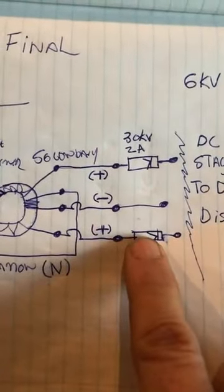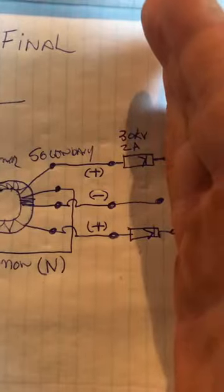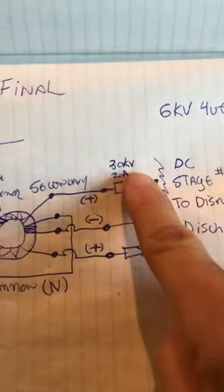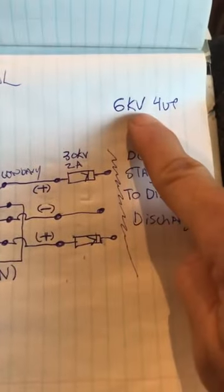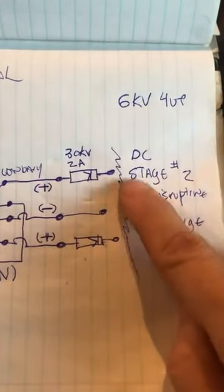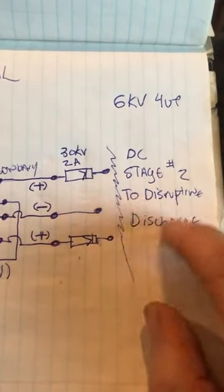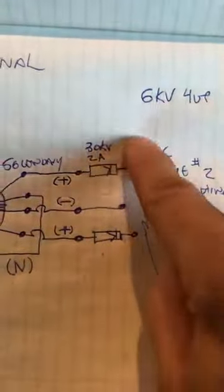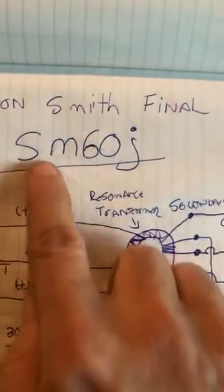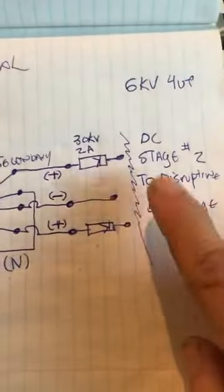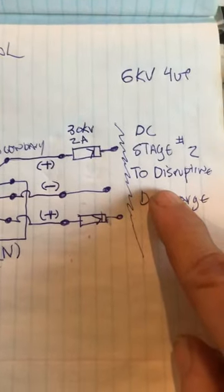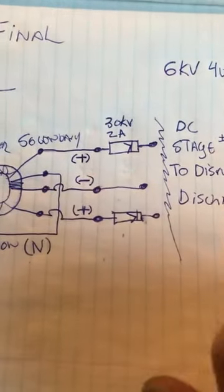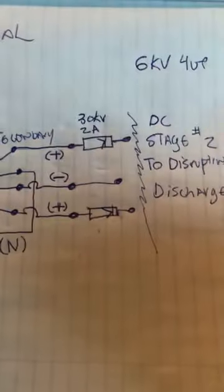So you end up with the device right here. And this here all the way back is Don Smith resonance system. From this point forward after the diodes, this is the 6 kilovolt, 6 kV, 4UF, DC stage number 2, to disruptive discharge. So this is your DC capacitor after this point. So up to that point, this is the SM60J. Anything after this point is a total different source of energy. It has zero relationship to the resonance source that supplies the charge to the capacitor.